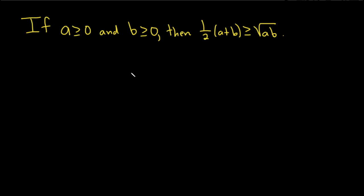In this problem we're going to prove this statement. If a is greater than or equal to 0 and b is greater than or equal to 0, then we have this inequality: 1/2(a+b) is greater than or equal to the square root of ab. Let's go ahead and go through the proof.